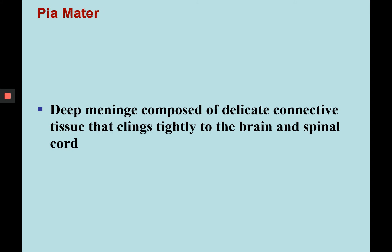The pia mater is the innermost or deepest meningeal layer that covers the brain itself. It's very delicate and thin but connective tissue, clinging tightly to the brain, going over the gyri and into the sulci. It's also found around the spinal cord. Keep in mind that the three meningeal layers also cover the spinal cord in the same order.